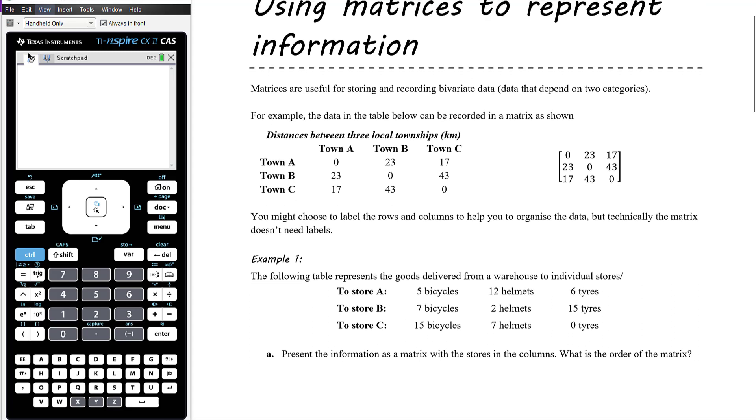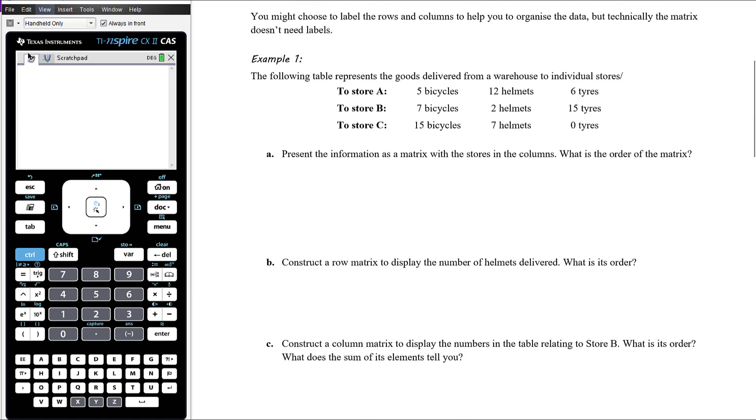Sometimes we choose to label the columns and rows. And in fact, that's quite common in VCE exams that they will label sort of outside here that this is town A and town B and town C. And this is town A and town B and town C. So you can clearly interpret the information out of the matrix. Example one, let's have a look.